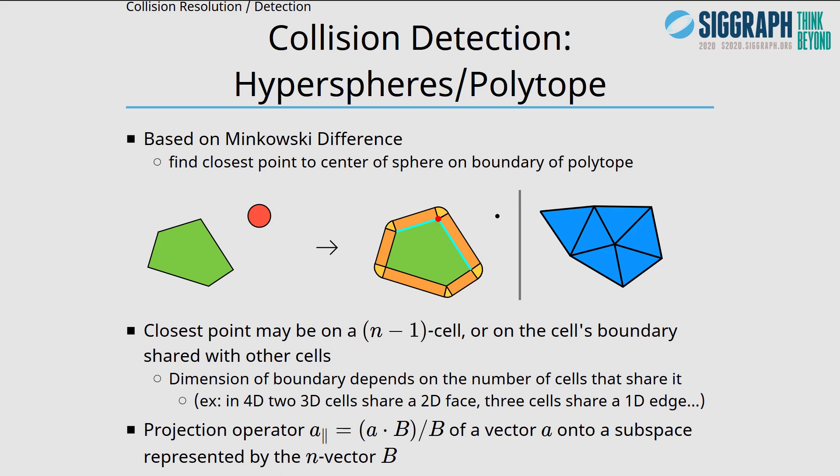The dimension of that boundary depends on the number of cells that share it. For example, on this diagram, two lines share a vertex, and in 3D, two triangles share a line, or three or more triangles share a vertex. In 4D, two 3D cells share a 2D face, three or more cells share a 1D edge, etc. I use the projection operator from geometric algebra to find the closest point on a subspace.